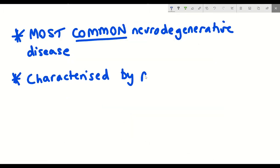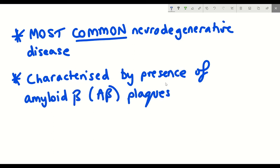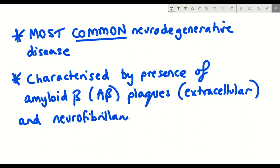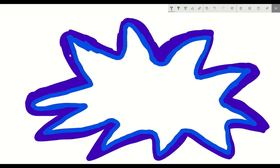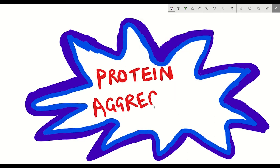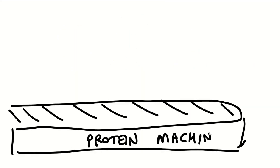Within this region you see an accumulation of amyloid beta plaques that are found outside of a cell and neurofibrillary tau tangles inside a cell. These are both protein aggregates.